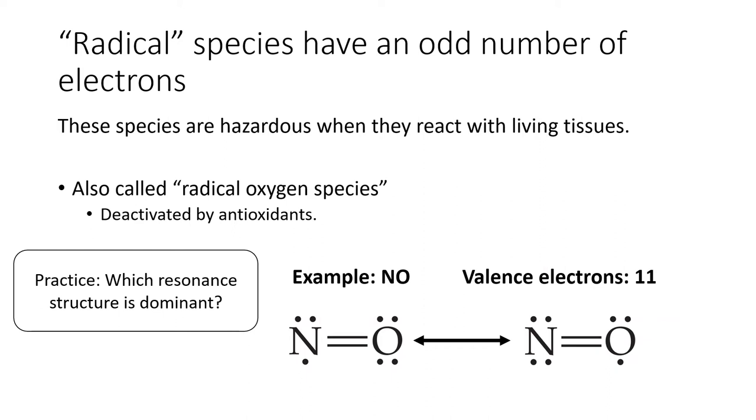The nitrogen monoxide molecule on this slide is an example of a radical species. Both of its resonance structures are shown on this page. Now, which of these two resonance structures is dominant? Pause the video and calculate formal charges in order to answer. The left structure is dominant since it has no formal charges.